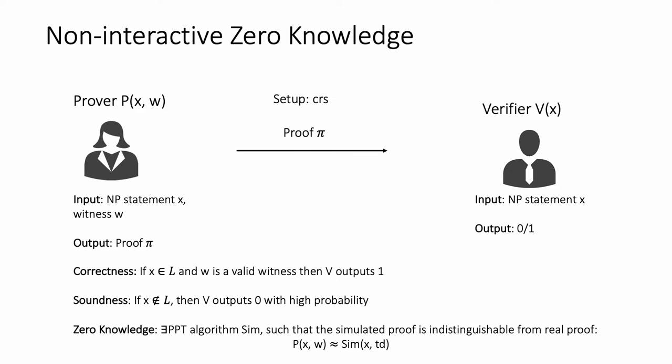Let me first define what a NIZK protocol is. In the NIZK protocol there is a prover who has an input statement x and a witness w, and the verifier has the same NP statement x. The prover computes a proof π which attests that x is in the language L and w is a valid witness for it. After obtaining a proof π, the verifier outputs either 0 or 1.